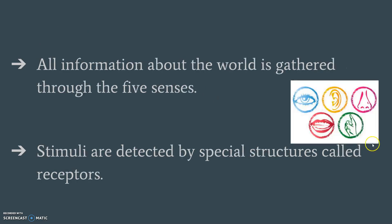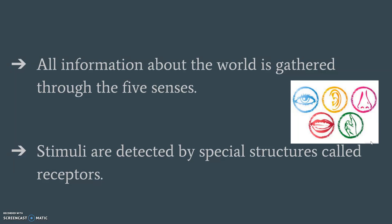All information that we take in about the world is gathered through our five senses. As I'm sure you know, those senses include sight, hearing, smell, taste, and touch. We detect stimuli in the world through special structures called receptors. We have several types of sensory receptors in our body, and we are going to mention a few in this video.